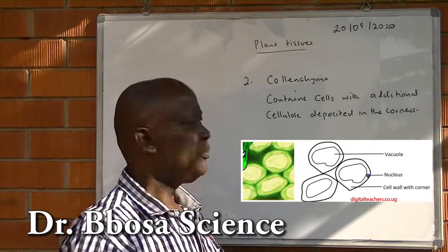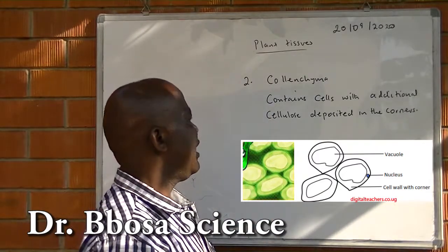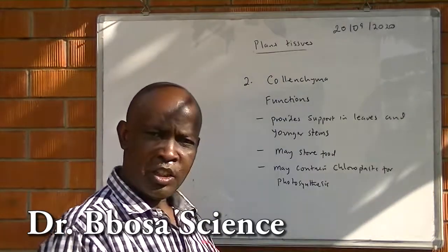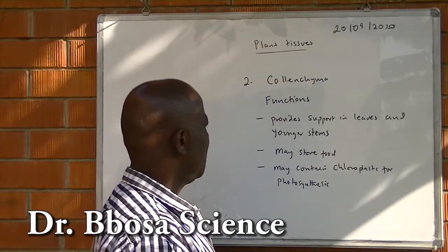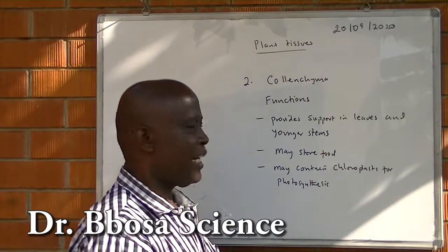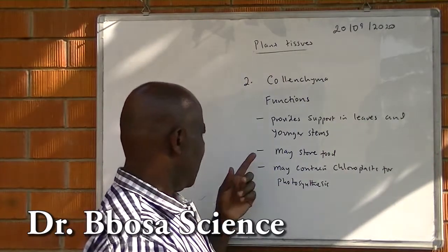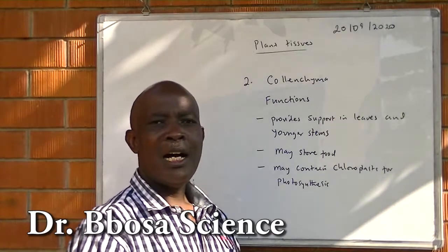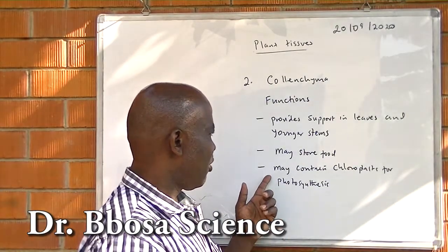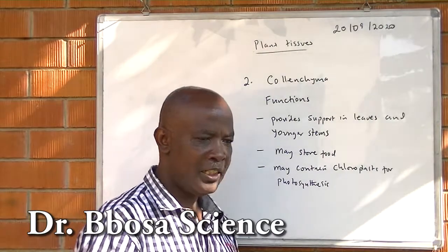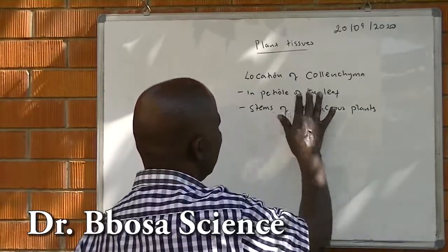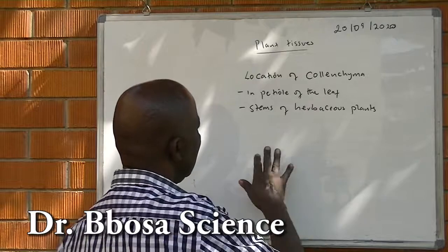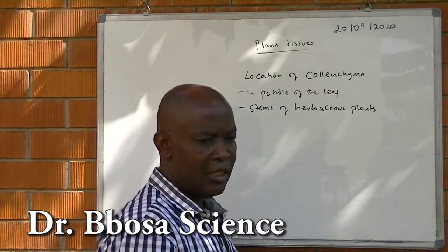Two: colenchyma. Containing cells with additional cellulose deposited in the corners. Functions of colenchyma tissue: provide support in leaves and younger stems. This is the major function, but some of them store food and in some plants they may contain chloroplasts for photosynthesis. Location of colenchyma: in the petiole of the leaves and stems of herbaceous plants.